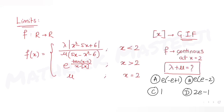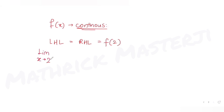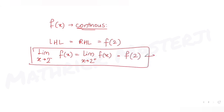Since f(x) is continuous at x = 2, I know that the left-hand limit and the right-hand limit should be equal to each other, and they should also equal the function's value at x = 2. So: lim(x→2⁻) f(x) = lim(x→2⁺) f(x) = f(2).